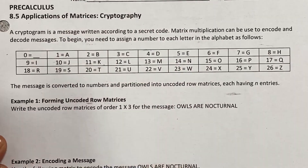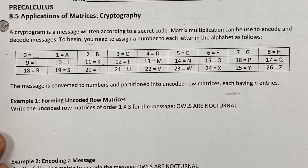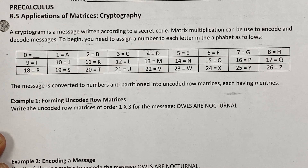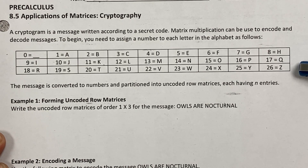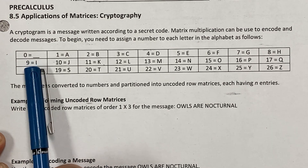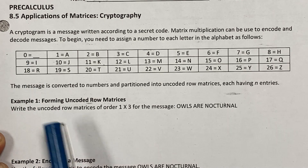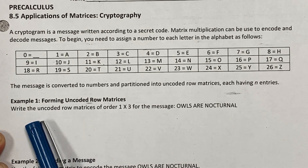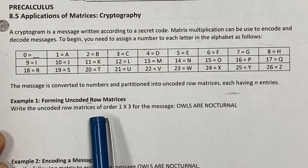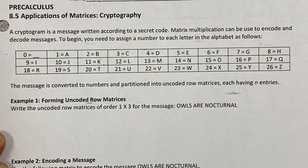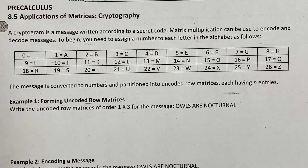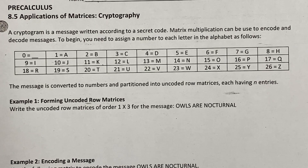So with cryptography you are encoding and decoding messages. Right here I have listed which letters correspond to which numbers, as well as a space which corresponds to zero. The first thing we want to do is write the uncoded row matrices of order 1×3 for the message 'owls are nocturnal.'